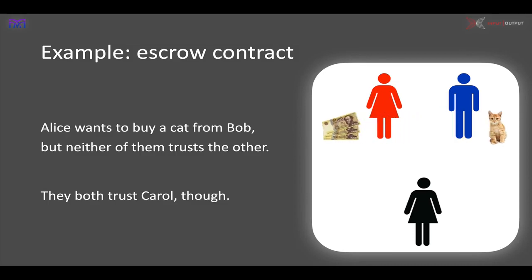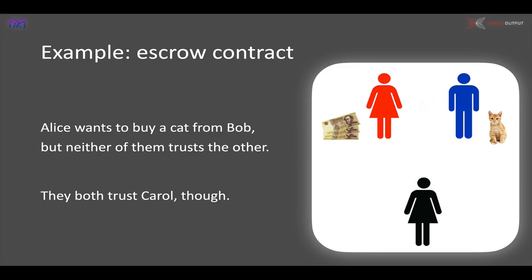Suppose Alice puts the money in and she waits for the cat but doesn't receive it. She doesn't want to make the payment. Bob does want to receive the money. So they disagree — she doesn't want to release the money, he does. What happens now is that Carol will intervene and say: in this situation Alice wants the money back, and that's the right thing. So Carol makes that decision and the money is released back to Alice.